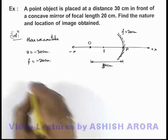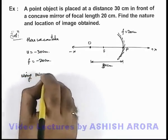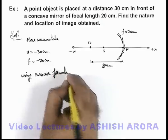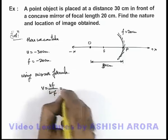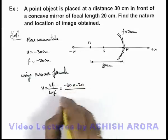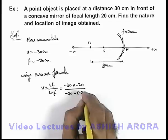Using mirror formula, the generalized result for calculation of v I can use as u f by u minus f. So on substituting the values, minus 30 into minus 20 divided by minus 30 minus of minus 20.